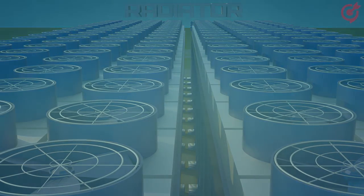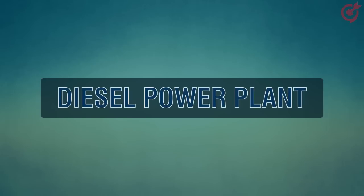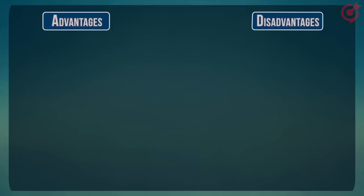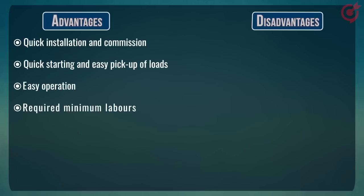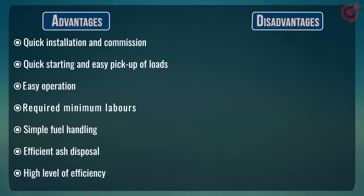This is how a diesel power plant works. Now let's look at its advantages and disadvantages. Advantages: the plant layout is simple, which ensures quick installation and commissioning compared to steam or hydropower plants. It offers quick starting and easy pickup of loads in a very short span of time. Load operation is easy and requires minimum labor. Fuel handling is simple with efficient ash disposal, and it has a high level of efficiency.